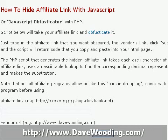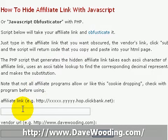You take your affiliate link and just drop it into the first box here, the affiliate link box. Then you take the vendor's link, put it into the vendor URL box, and click submit. You're going to get back some code that looks all kind of garbly, and then you're going to want to copy and paste that into your HTML page.